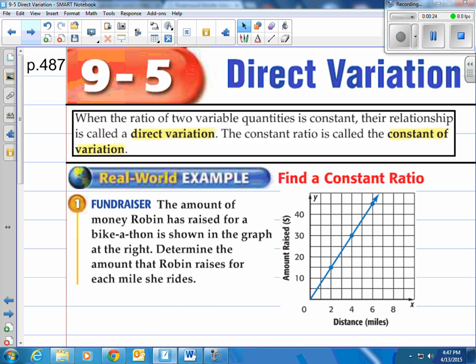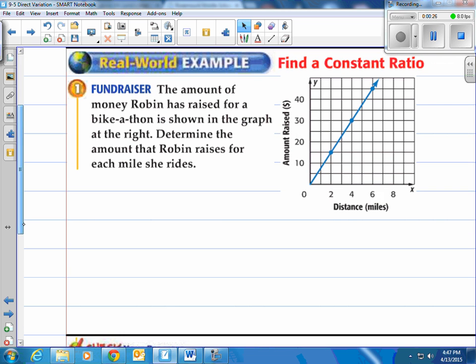Best way to look at this is an example so let's take a look at this first one. It says find a constant ratio. The amount of money Robin has raised for a fundraiser for a bike-a-thon is shown in the graph at the right. Determine the amount that Robin raises for each mile she rides.